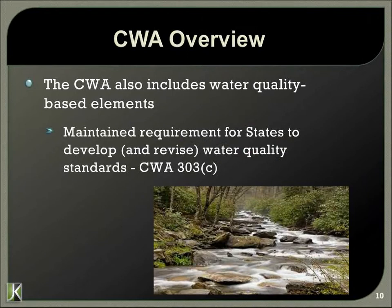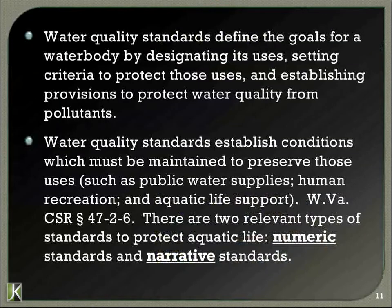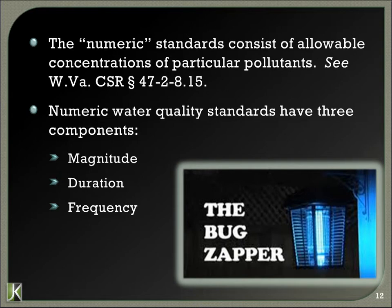States still adopt water quality standards — in West Virginia, that's the WV Department of Environmental Protection. The water quality standards define the goals for a water body by designating uses and setting criteria to protect those uses, such as public water supply, human recreation, and aquatic life support. The water quality standards are the goals, but they're implemented under the Modern Clean Water Act by end-of-pipe effluent limitations. We separate them into two basic categories: numeric standards and narrative standards. We're going to talk about two cases — one illustrating enforcement of the numeric standard and one of the narrative standard.